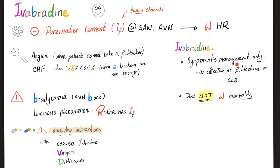Ivabradine is for symptomatic management only. It is as effective as beta blockers or calcium channel blockers, but please do not forget — it does not lower mortality in angina or CHF. It is just for symptomatic management; it does not improve survival or decrease mortality.